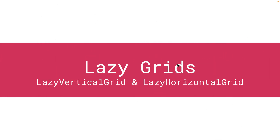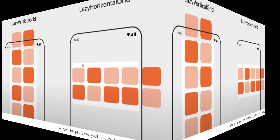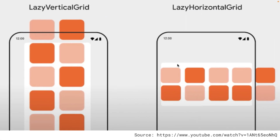Let's discuss lazy grids now, which include lazy vertical and horizontal grid. A lazy vertical grid will display its items in a vertically scrollable container spanned across multiple columns, while lazy horizontal grid will have the same behavior on the horizontal axis. Grids have the same powerful API capabilities as lists and use a very similar DSL — lazy grid scope — for describing the content.